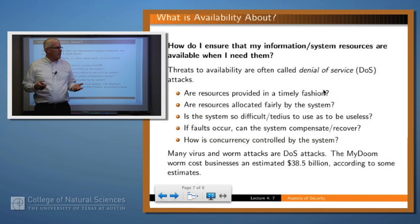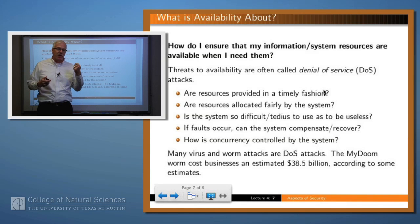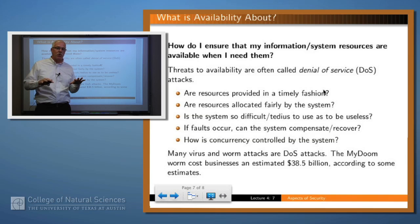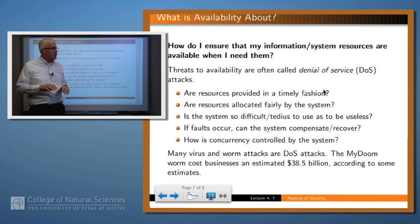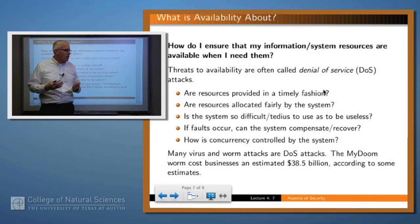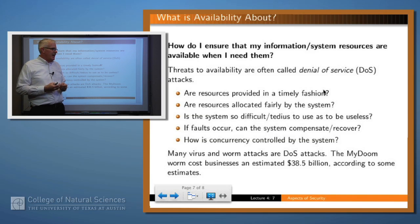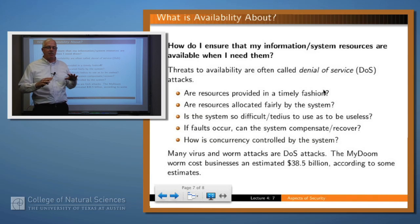Availability is about ensuring that resources are there when you need them. Threats to availability are usually called denial of service attacks, and many of the viruses and worms you hear about on the internet are in fact denial of service attacks. The questions you ask here are: are the resources provided when I need them? Are they provided fairly? Is the system perhaps too difficult or tedious to use so that it becomes useless — if things are so slow on Amazon, I'll go to Barnes and Noble instead. And how is concurrency controlled so multiple users don't mess up one another's data?